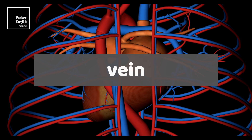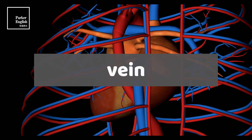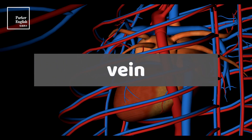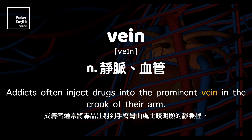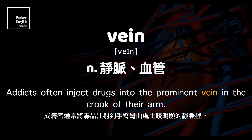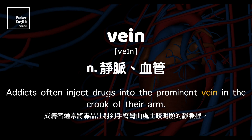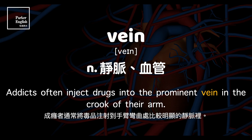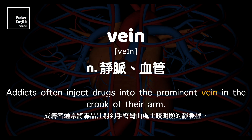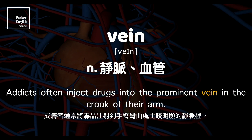Vein. Addicts often inject drugs into the prominent vein in the crook of their arm.